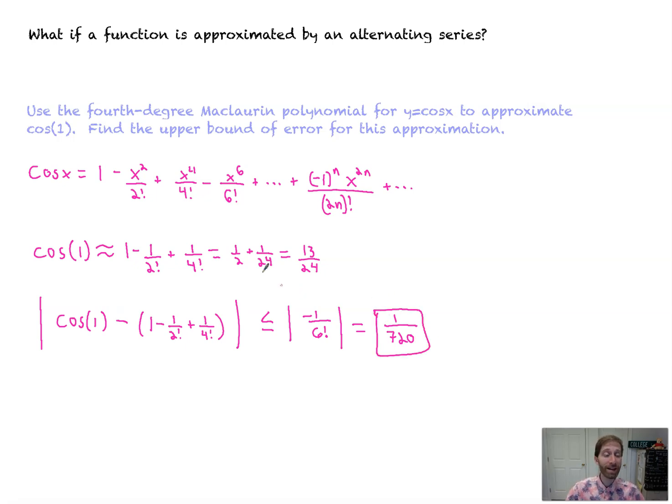Not bad, by the way. So whatever cosine of one is, it's not exactly thirteen twenty-fourths, but we're off by at most one seven hundred twentieth in either direction. That's it.